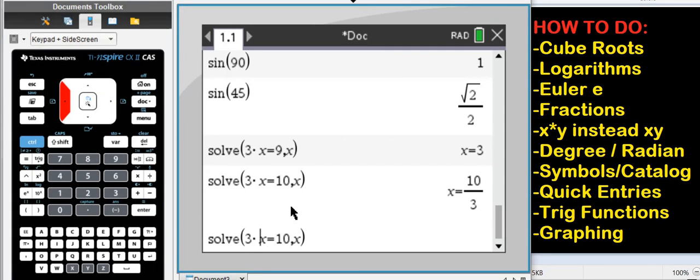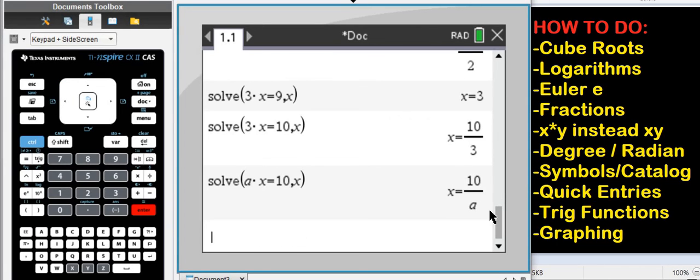It gets even better. If I have a instead of 3, it gives me the answer in terms of a. 10 over a. 10 over a.